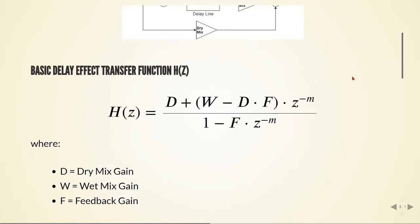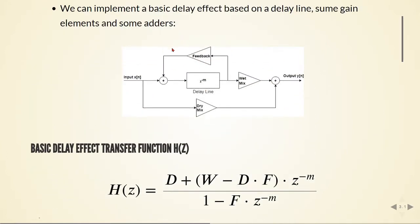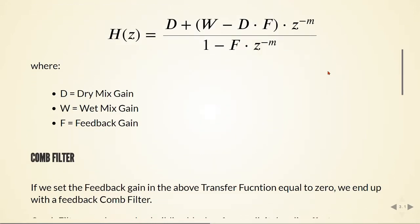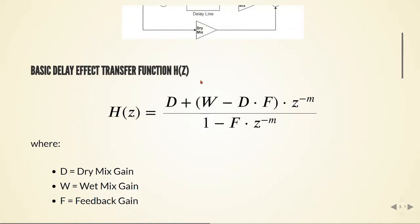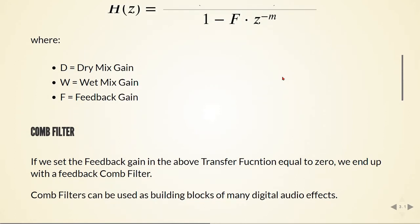If we set the feedback gain to zero, then we will have this delayed version of our signal and a non-delayed version of the signal. They are added to this output, and this results into a comb filter. So if we set the feedback gain in this transfer function to zero, we end up with a feedforward comb filter.